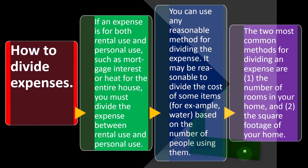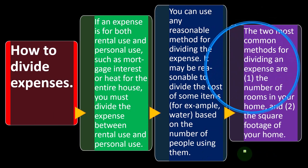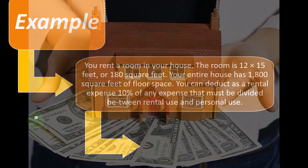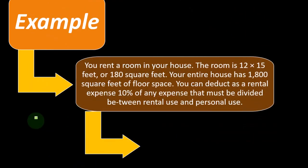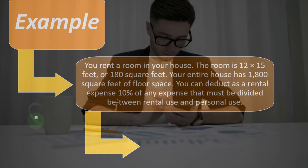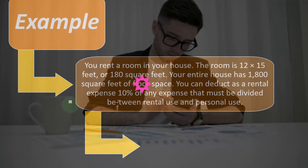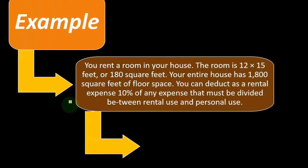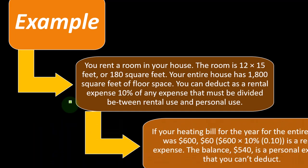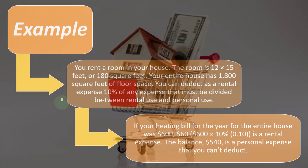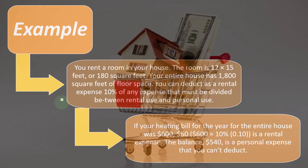Example: you rent a room in your house. The room is 12 by 15 feet — 180 square feet — and your entire house is 1,800 square feet of floor space. You can deduct as rental expense 10% of any expense that must be divided between rental and personal use, because 180 divided by 1,800 equals 10%. So if your heating bill for the year for the entire house was $600, then $60 (600 times 10%) is a rental expense. The balance of $540 is a personal expense that you can't deduct.